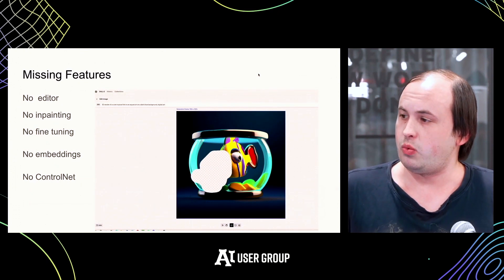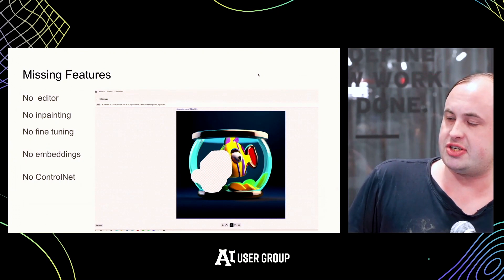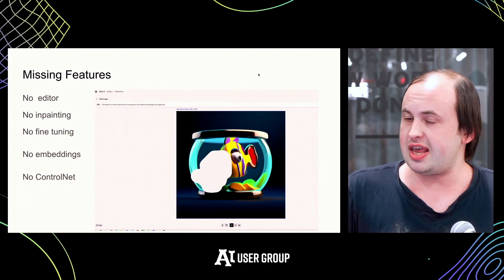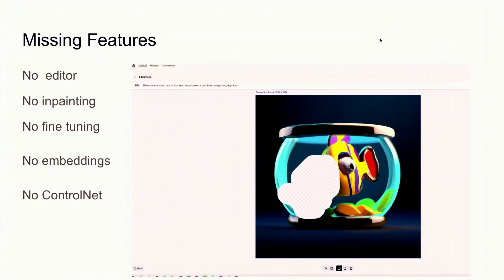Here's an image of the old DALL-E 2 editor, which had features like inpainting — where you could delete certain sections of an image and regenerate just that part. DALL-E 3 has almost none of that. You can't do inpainting, you can't fine-tune, you can't create embeddings or ControlNet. It's basically only usable through the chatbot, similar to how MidJourney works.